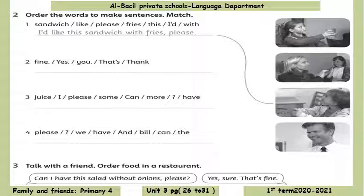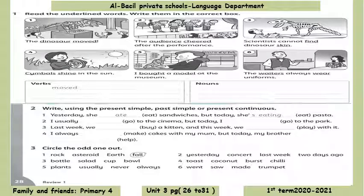Number three: talk with a friend, order food in a restaurant. Try to make a small conversation in the restaurant — like: Can I have this salad without onions, please? Yes, sure, that's fine. Number three: read the underlined words and write them in the correct place. For example, picture number one: the dinosaur moved. We put 'moved' under the verbs column. You should put 'dinosaur' under nouns. Number two: write 'pasta'.